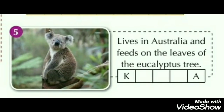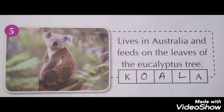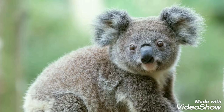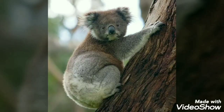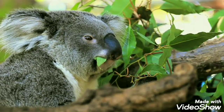Fifth lives in Australia and sits on the limbs of Eucalyptus trees. And the answer is Koala. They are adorable and look cute, even when they are terrified.